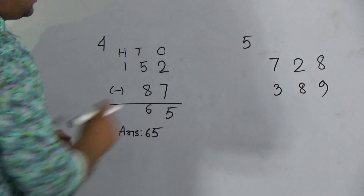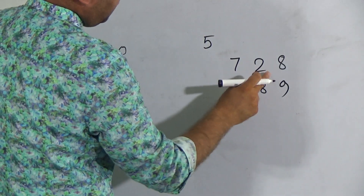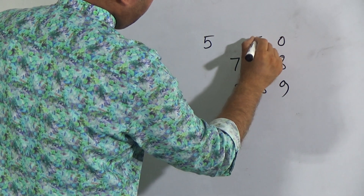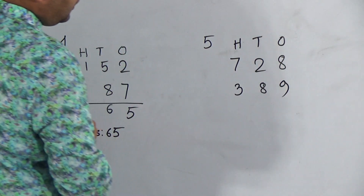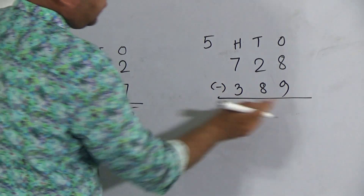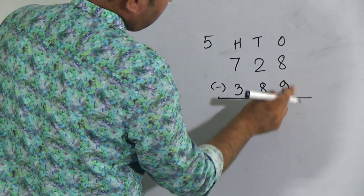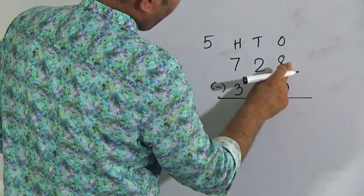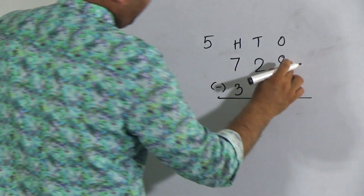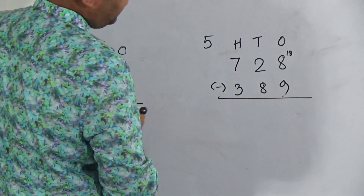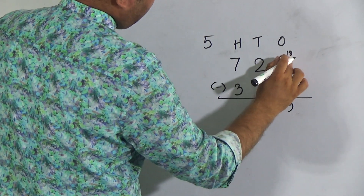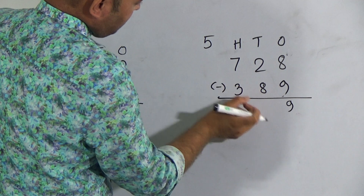Now look here, here is question number five: seven hundred twenty-eight and three hundred eighty-nine. Here is the ones place, here is the tens place, and here is the hundreds place. Now draw a line and put a minus sign. Subtract nine from eight — eight is smaller than nine — so it will be eighteen. Now subtract nine from eighteen, it will be nine, and we have carry one.